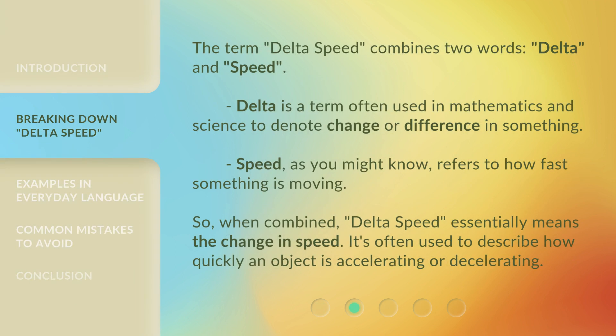The term Delta Speed combines two words: Delta and Speed. Delta is a term often used in mathematics and science to denote change or difference in something. Speed, as you might know, refers to how fast something is moving. So when combined, Delta Speed essentially means the change in speed. It's often used to describe how quickly an object is accelerating or decelerating.